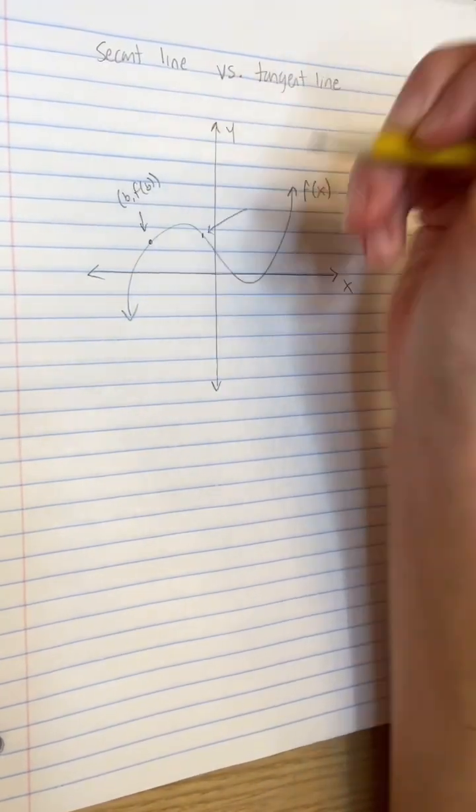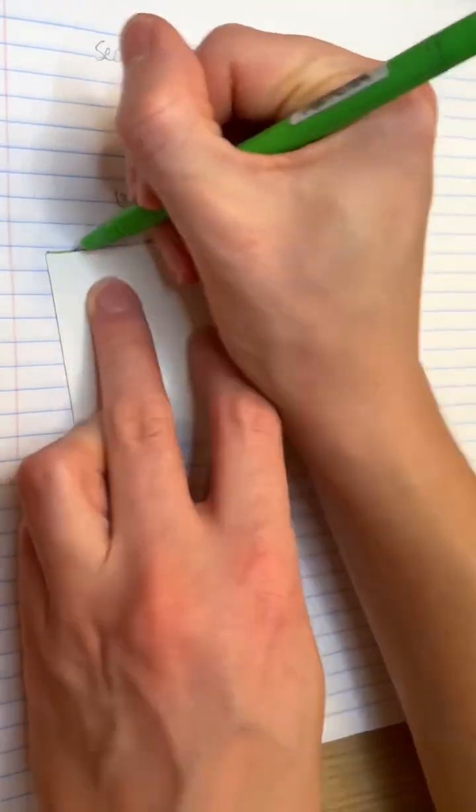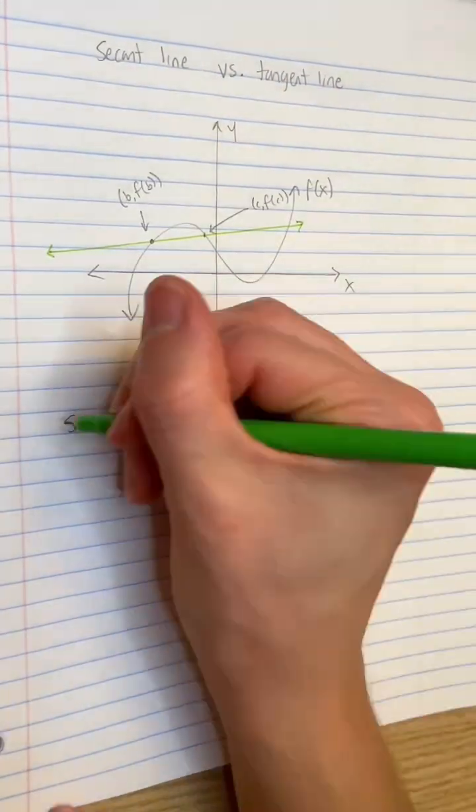A secant line connects two known points on f of x. I'll name them b comma f of b and c comma f of c.